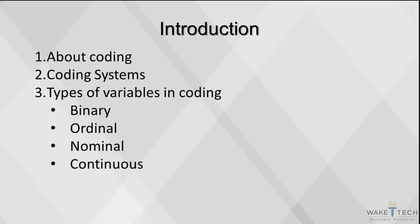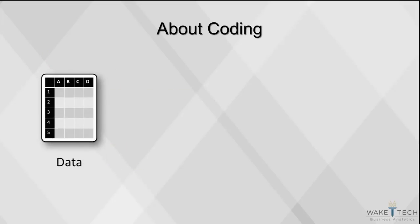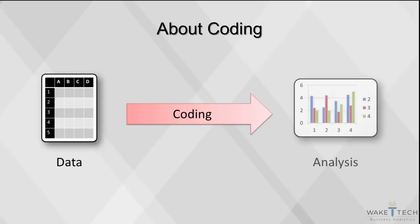This video will cover basic information about coding, coding systems, and types of variables in coding, including binary, ordinal, nominal, and continuous. Coding is the process of translating the information gathered from questionnaires and other investigations into something that can be analyzed, usually using a computer program.